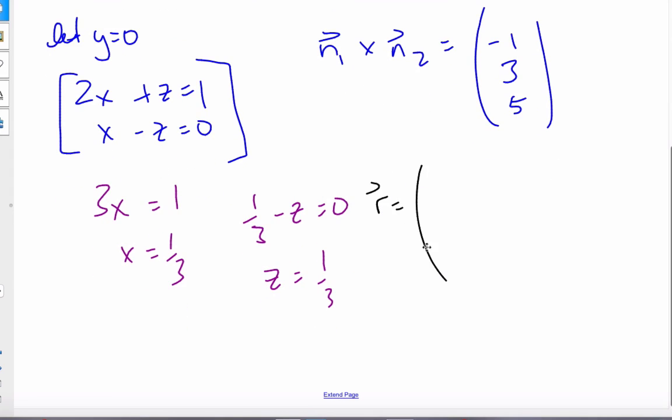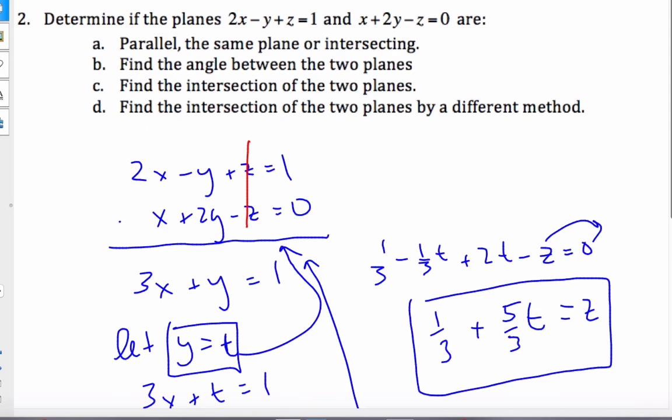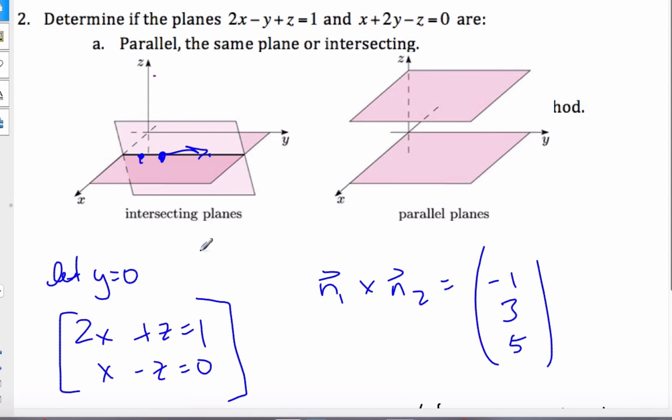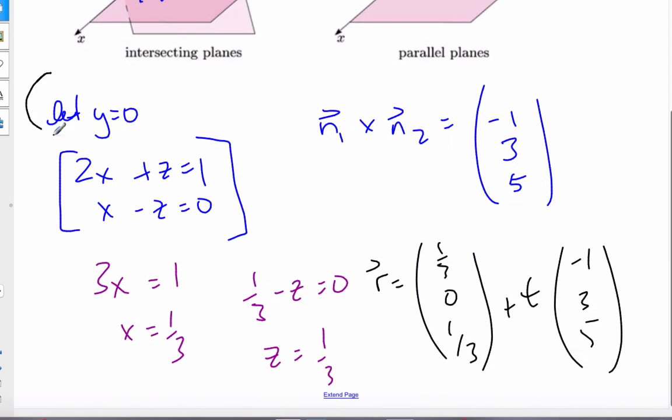The point I can have to make my equation of the line is r equals 1/3, 0, 1/3 plus t times -1, 3, 5. If I go back to my previous example, you will see it is exactly the same point.